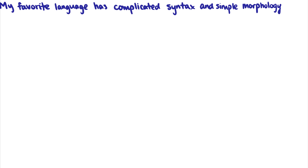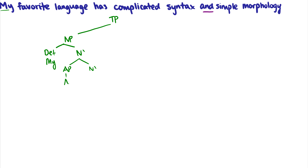The third example: 'My favorite language has complicated syntax and simple morphology.' We're going to introduce 'and' — a coordination. For 'my favorite language,' we'll treat 'my' as a determiner — specifier, daughter of NP, sister to N-bar. 'Favorite' is an adjective describing the language, so it's daughter of an N-bar, sister to an N-bar because it's an adjunct: A-bar, A, 'favorite.' And then N, which is 'language.' That's our subject.